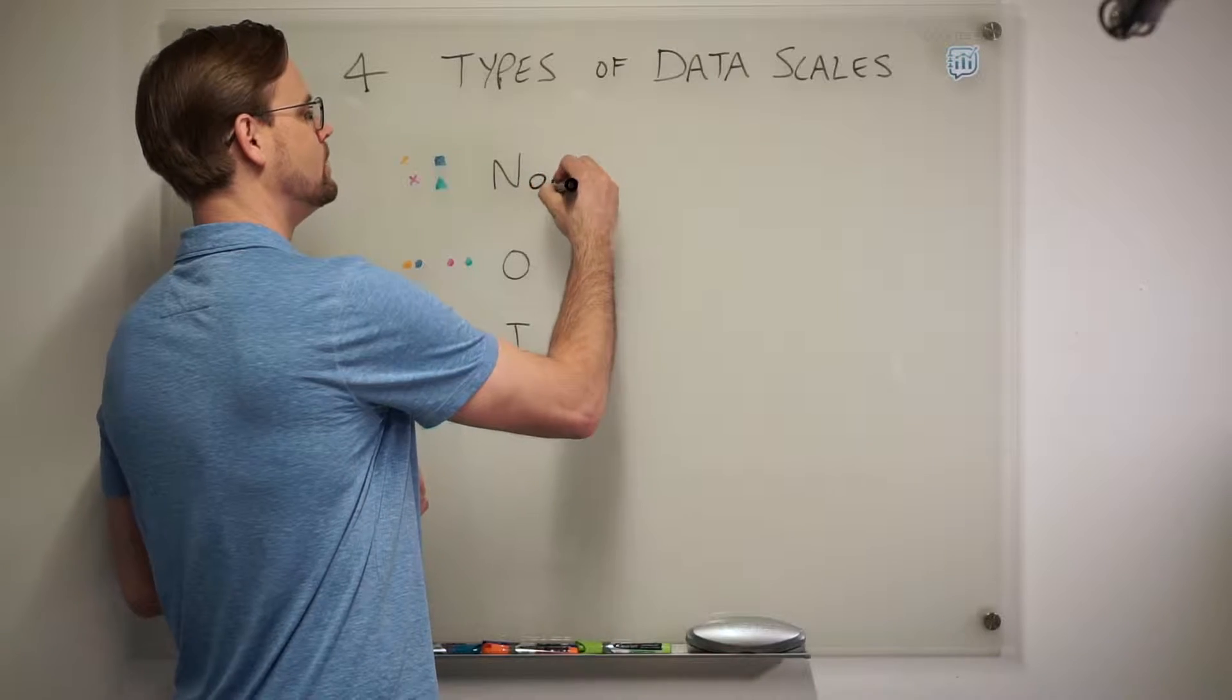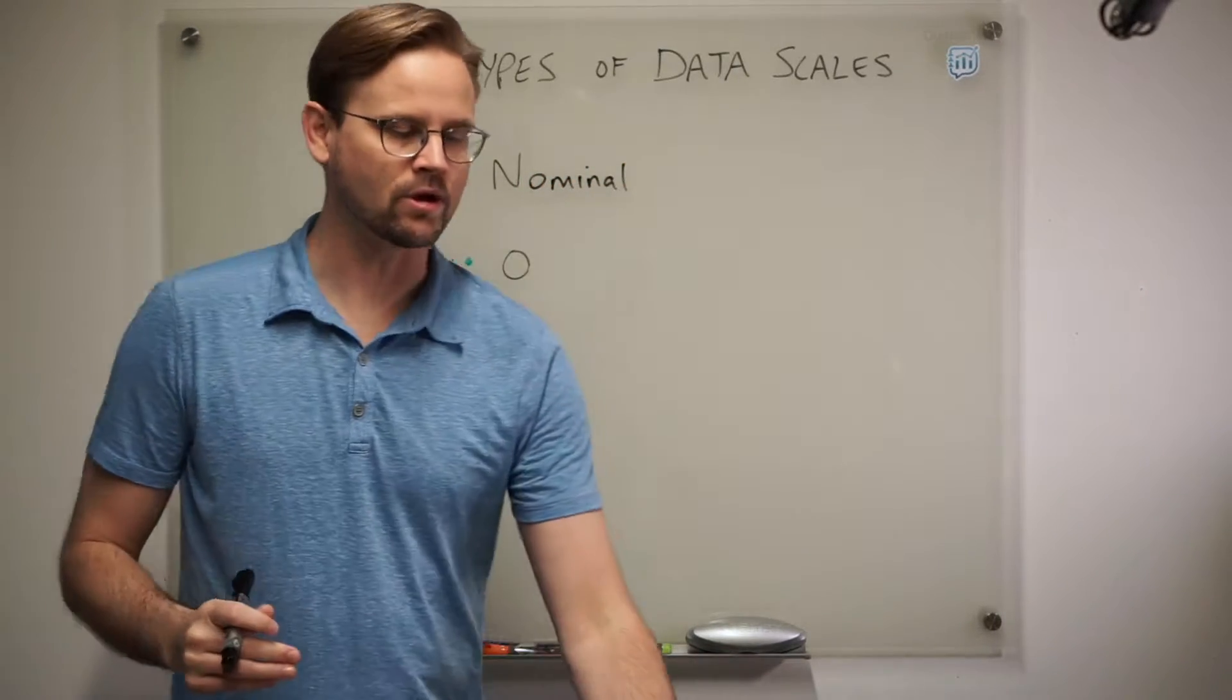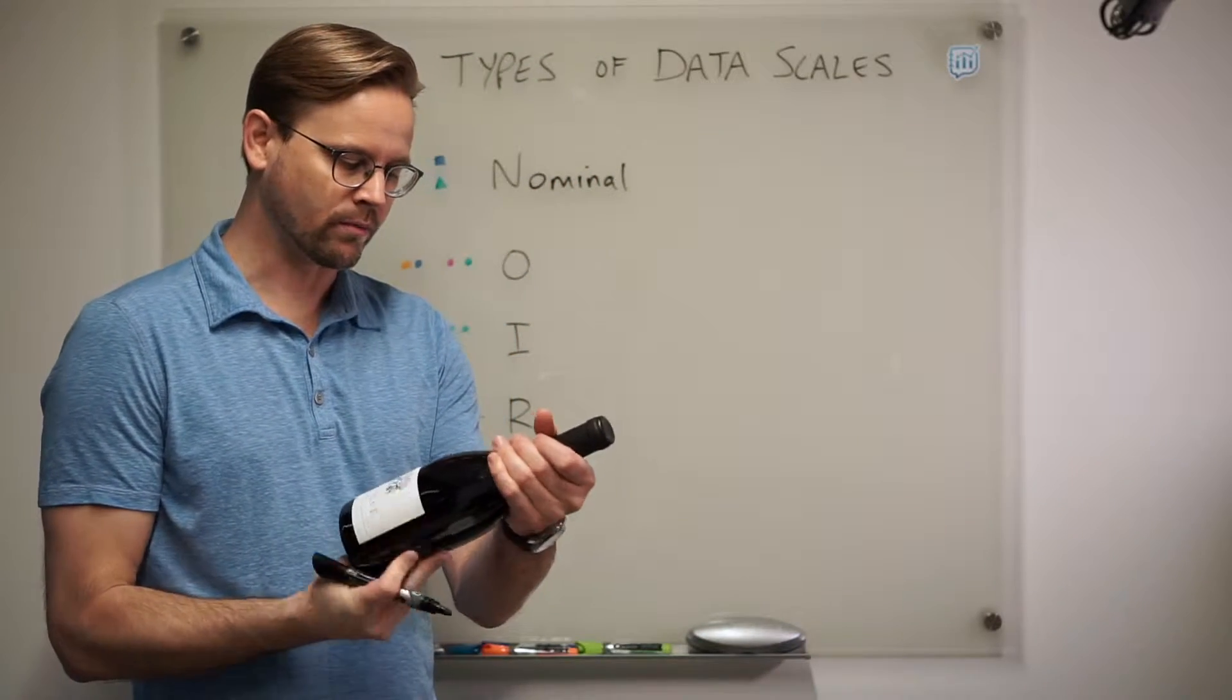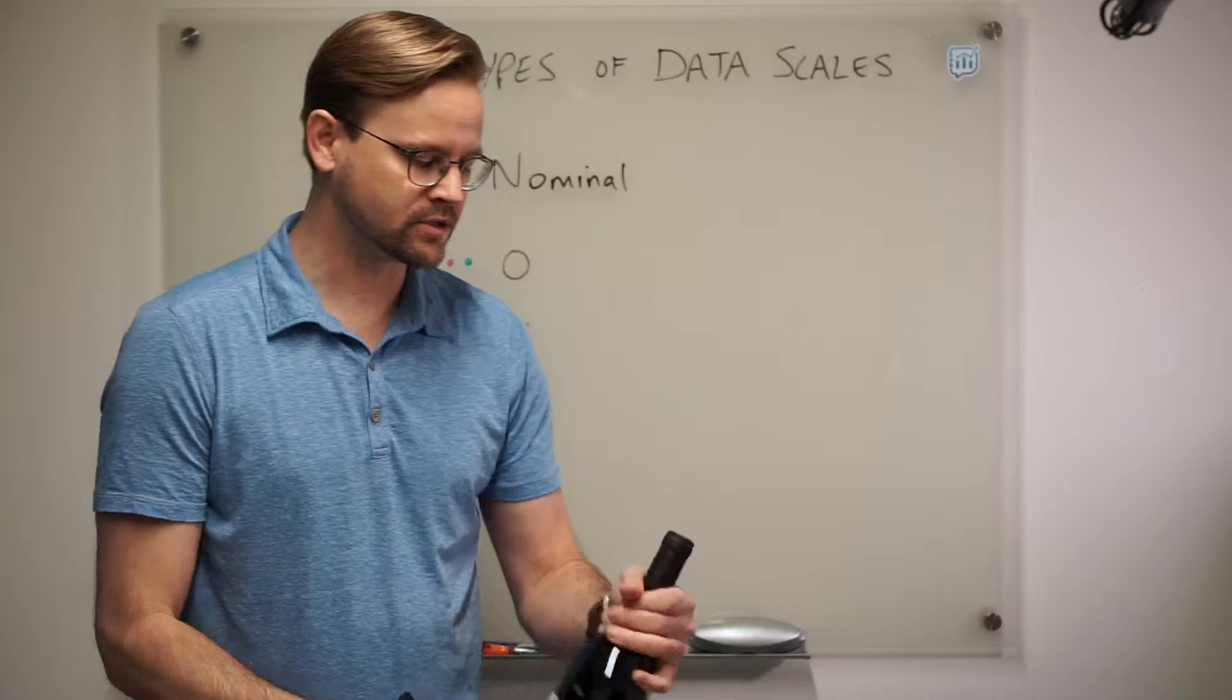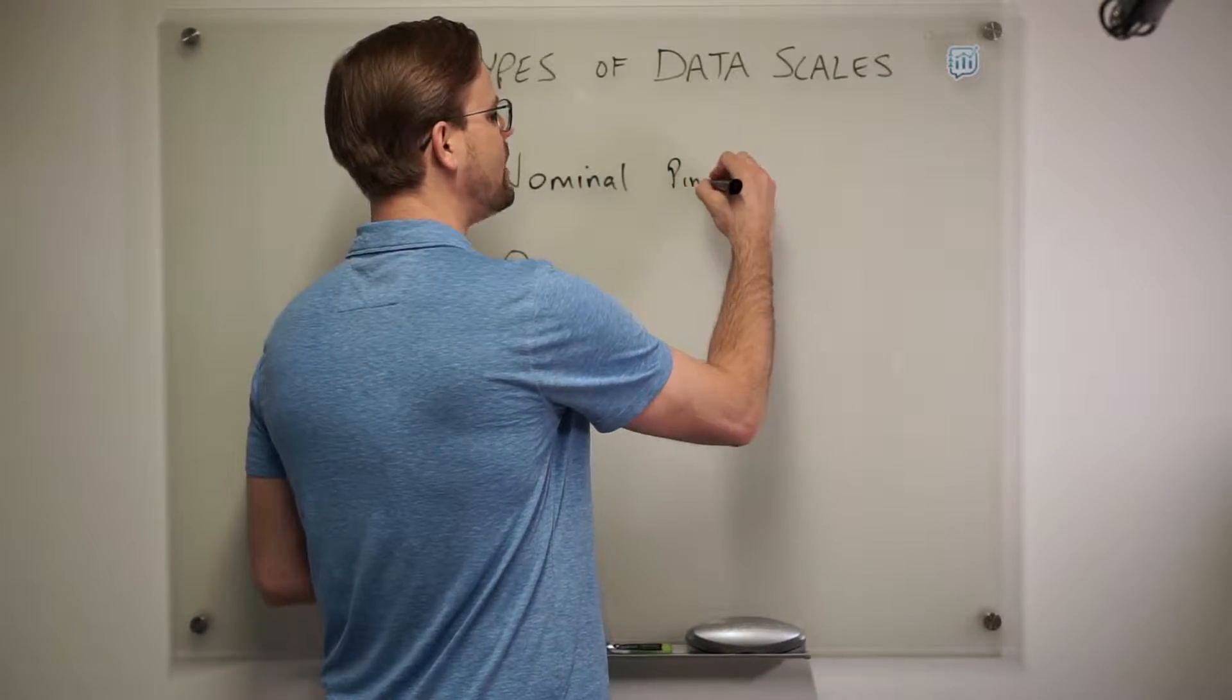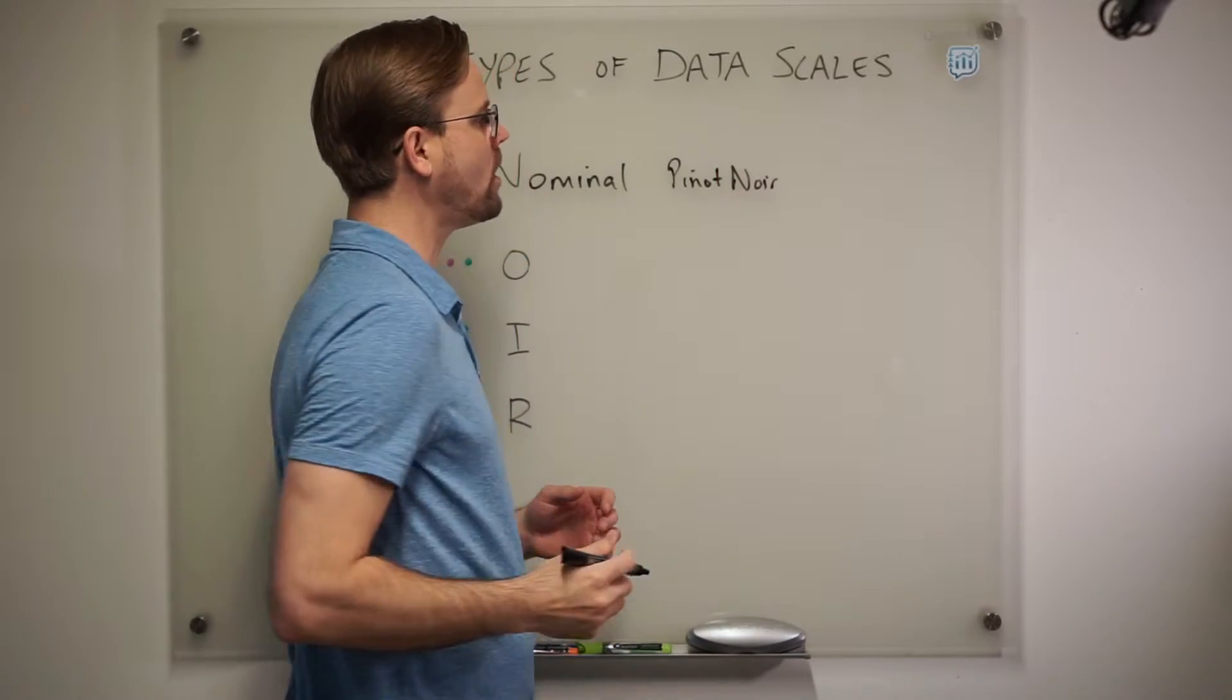The first one is nominal. Nominal data scales are names of things. Think nominal, think names. This could be the name of the winemaker or the bottler. It could be the type of wine. So let's use that as an example, Pinot Noir or Merlot or Cabernet Sauvignon. That is the way we classify a type of wine.